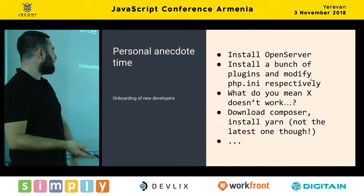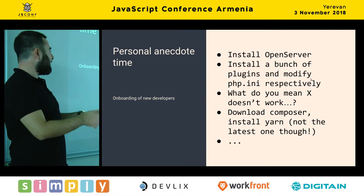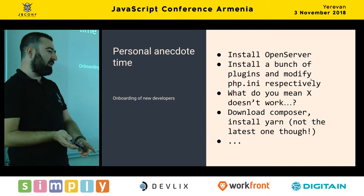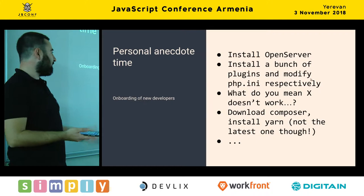Change your PHP ini, then install something that doesn't work, we have to go in and start figuring out what's not working on the machine. Then download Composer, install Yarn — not the very latest version, the one that's on the production machine — and a whole host of other problems. I'm pretty sure you might have come across similar problems.